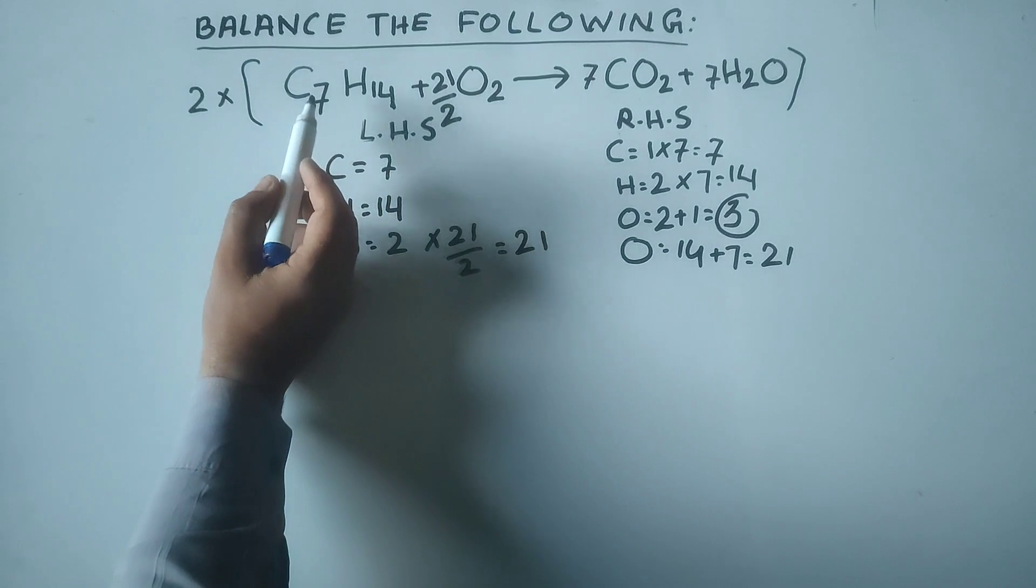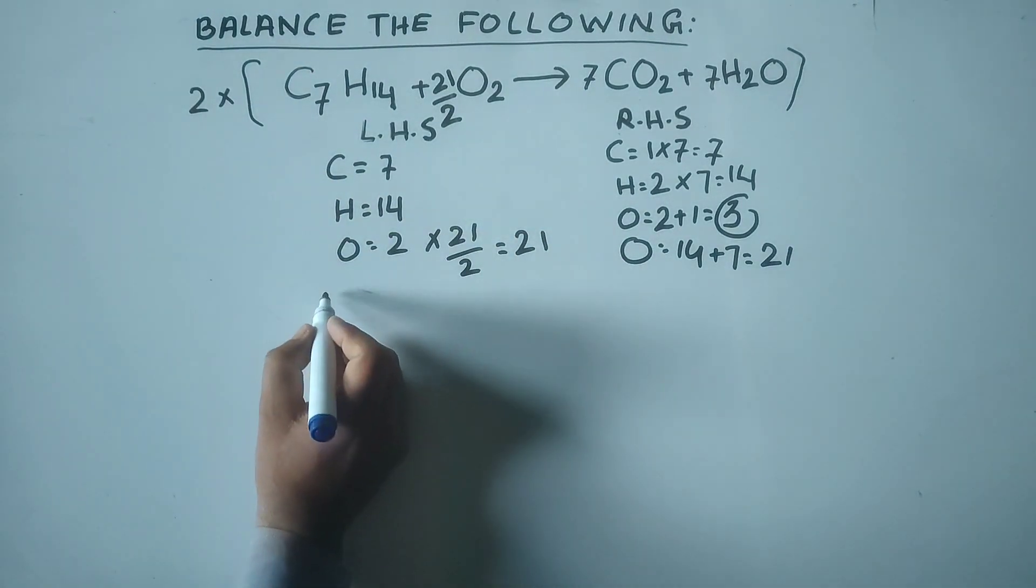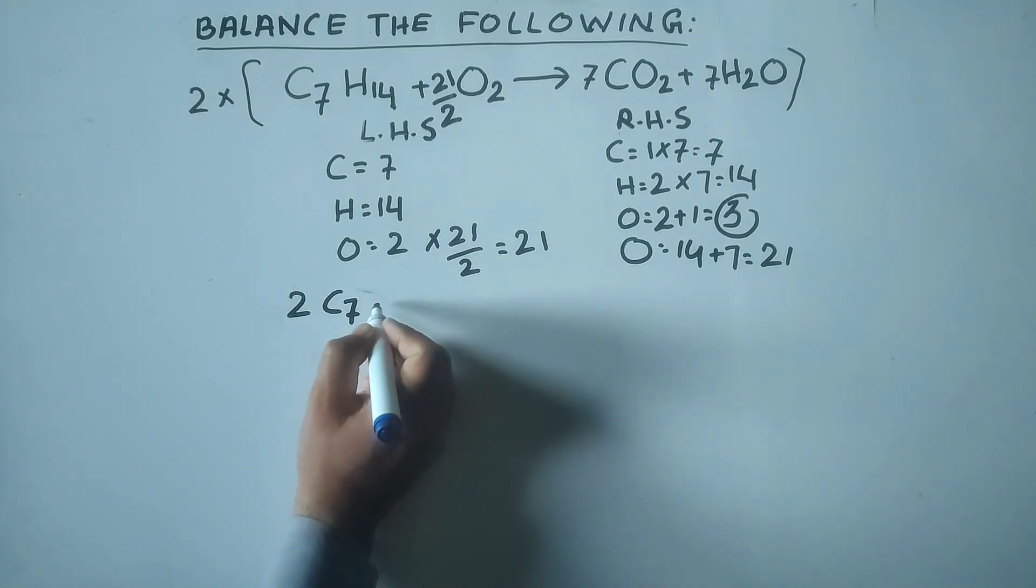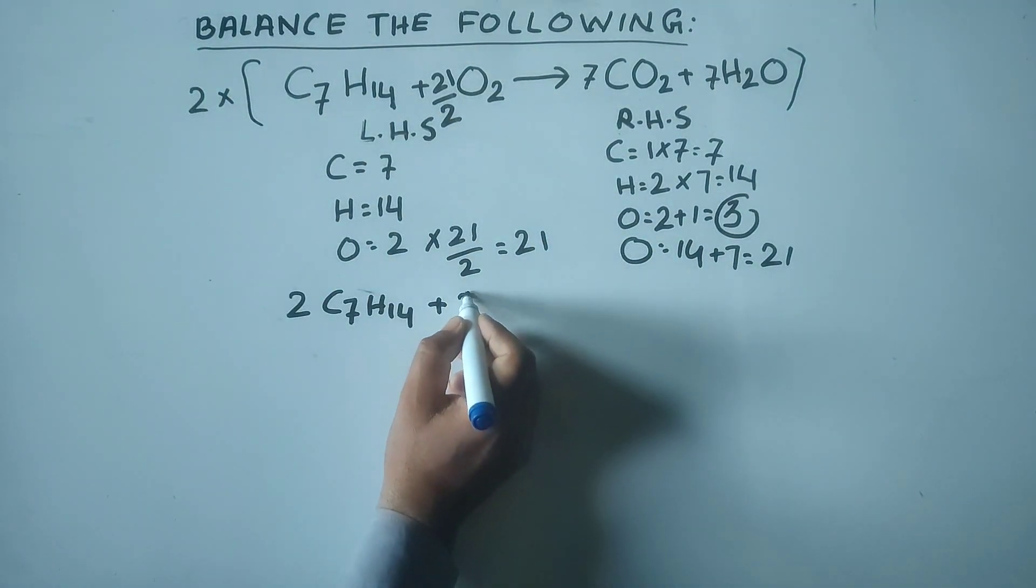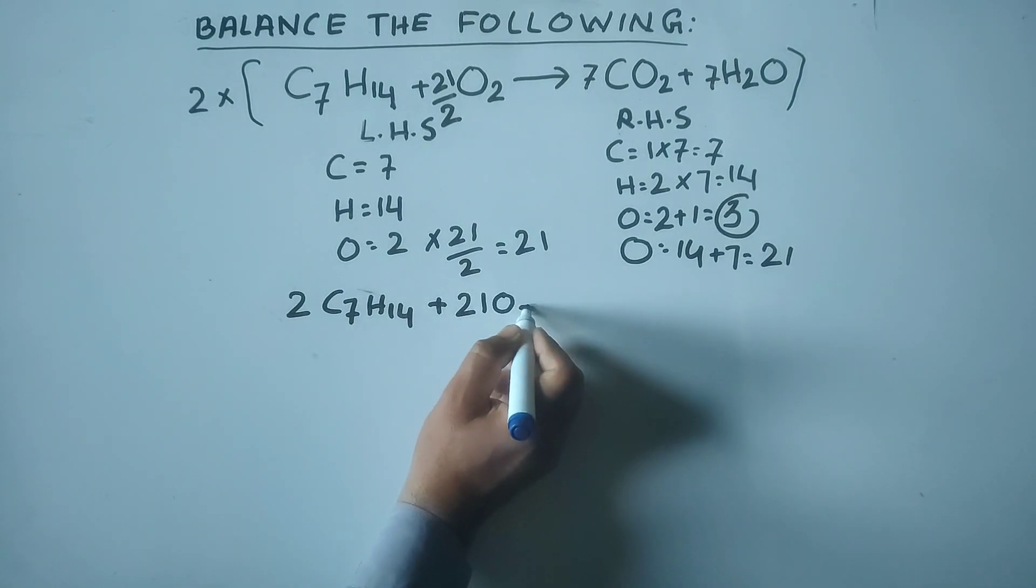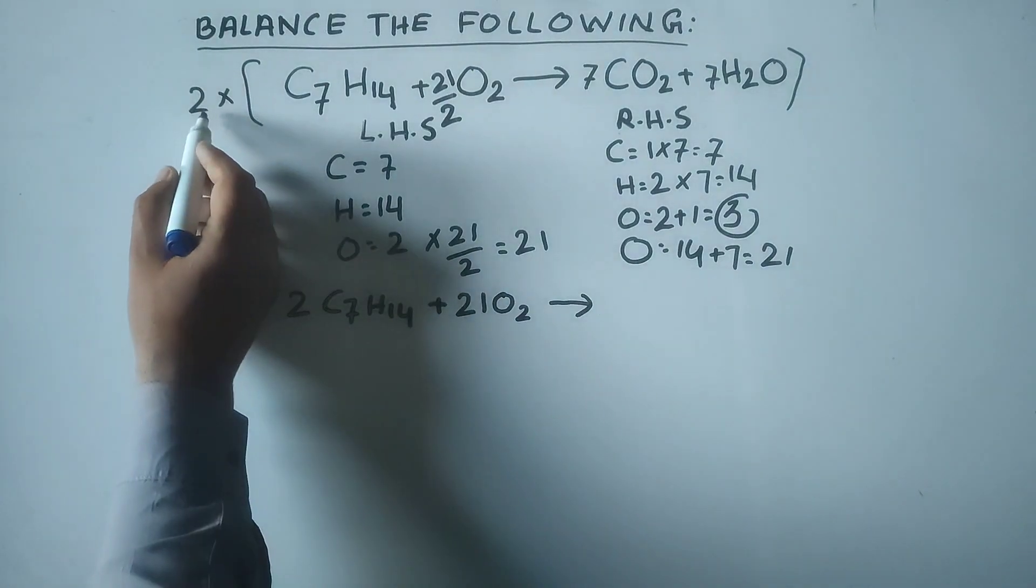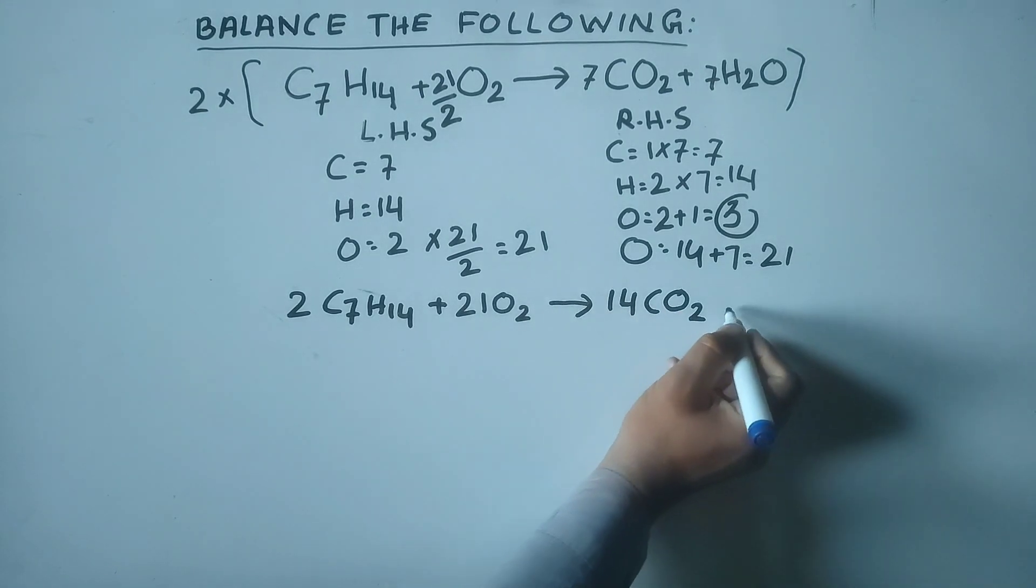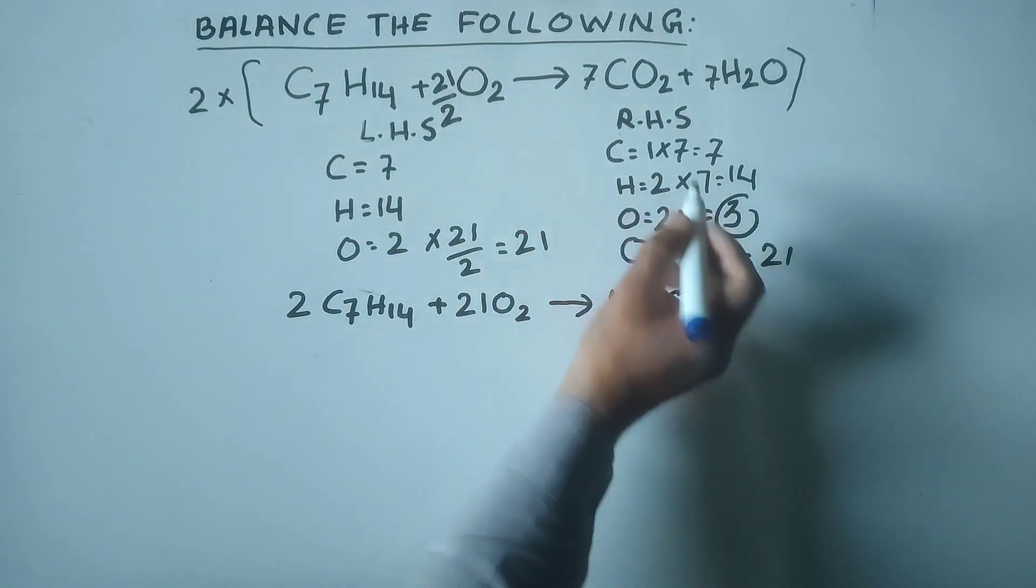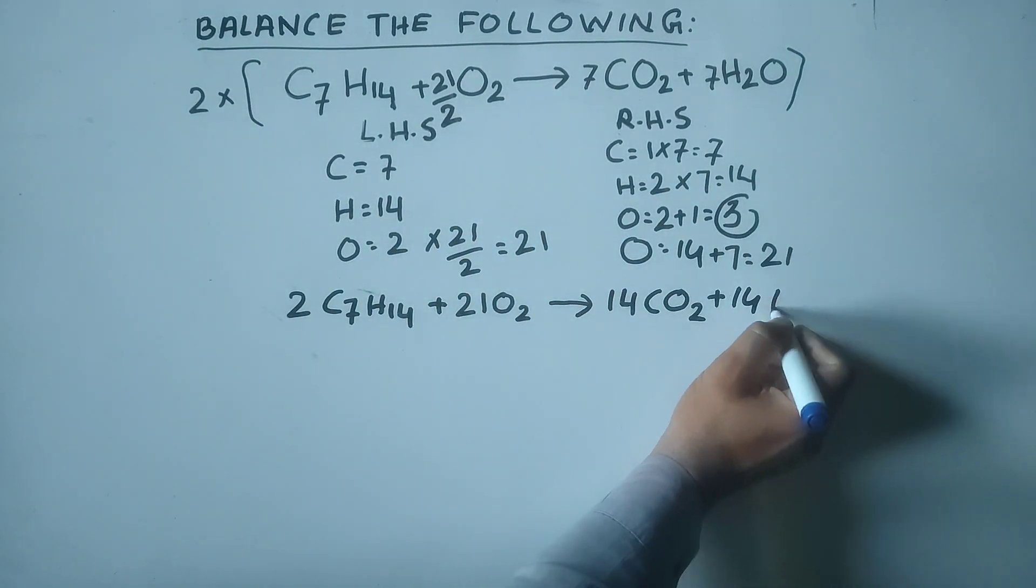C7H14 is multiplied by 2, so the balanced equation is: 2 C7H14 + 21 O2 → 14 CO2 + 14 H2O.